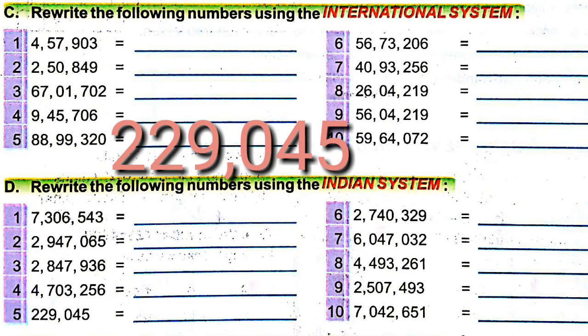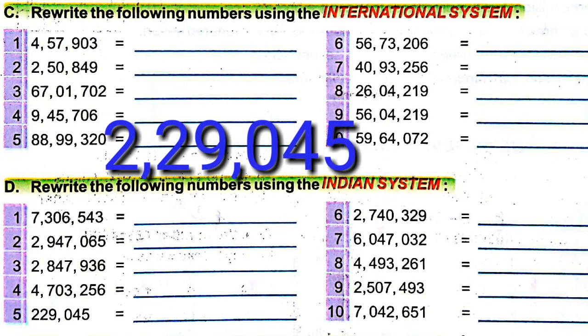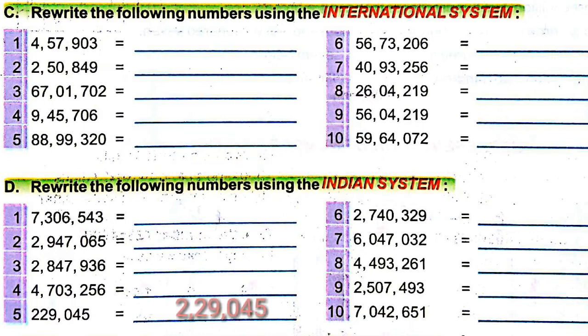The next given number is 229,045. There are six digits, so we have to put a comma before three and five digits. The number is 2,29,045. From number six to ten, you do those problems next.